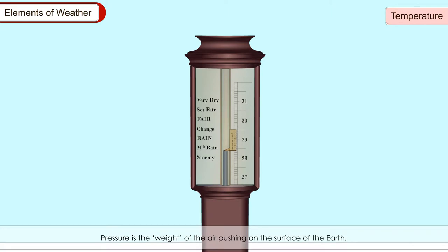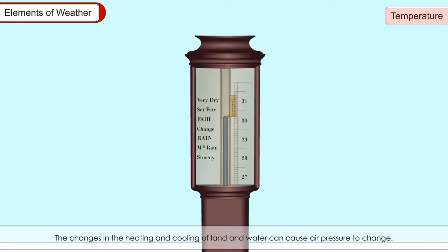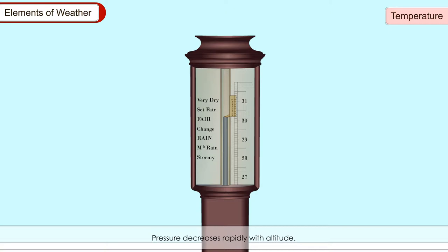Pressure is the weight of the air pushing on the surface of the earth. It is measured by a barometer. It varies on the earth's surface. Changes in the heating and cooling of land and water can cause air pressure to change, and these changes in air pressure create winds. Pressure decreases rapidly with altitude.